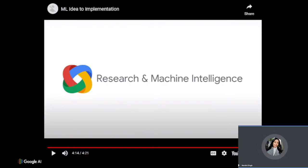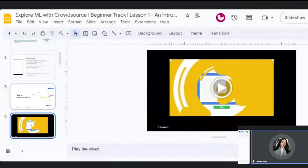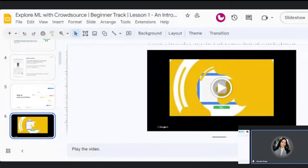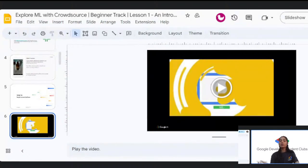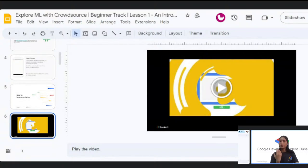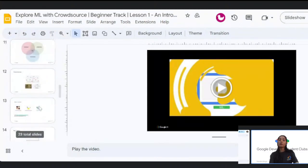That video showed how an idea is implemented, how a machine learning model is first trained and then deployed. In this session, we covered artificial intelligence, the difference between machine learning and deep learning, the three types of machine learning — supervised, unsupervised, and reinforcement — with examples for each, the process from data collection to model deployment, and the challenges faced while training a model.